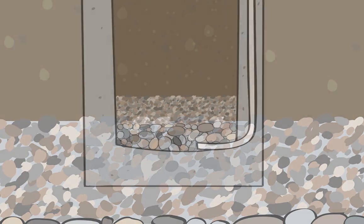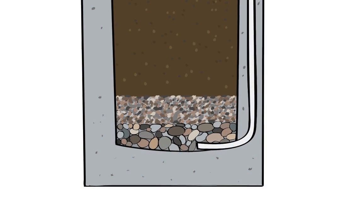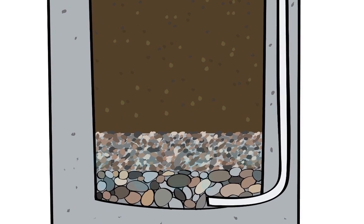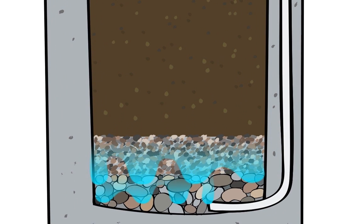At the very bottom of the biosand filter is the drainage gravel, which prevents the separation gravel from blocking the outlet tube.